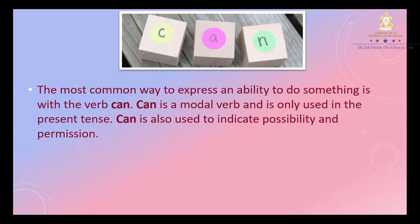Can. The most common way to express an ability to do something is with the verb 'can'. Can is a modal verb and is only used in the present tense. Can is also used to indicate possibility and permission. La forma más común de expresar la capacidad de hacer algo es con el verbo can. Can es un verbo modal y solo se usa en presente. Can también se usa para indicar posibilidad y permiso.